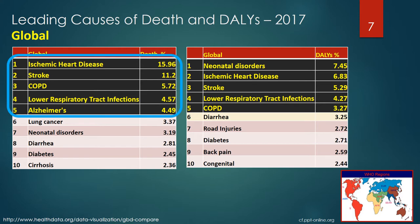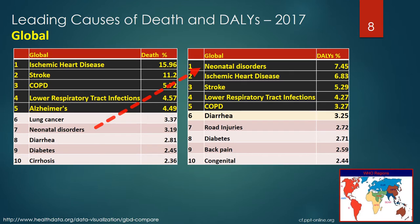The five leading global causes of death in 2017 in descending order were ischemic heart disease, stroke, chronic obstructive pulmonary disease (COPD), lower respiratory tract infections, and Alzheimer's disease. Yet the five leading health impacts via DALYs have neonatal disorders moving from the seventh position in leading causes of death to the top of the list, followed by ischemic heart disease, stroke, lower respiratory tract infections, and COPD. DALYs provide a different perspective on disease burden versus just considering the causes of death in a population.